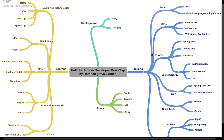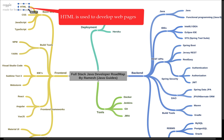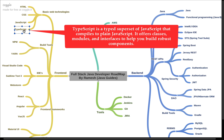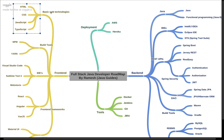On the front-end side we have HTML, CSS, JavaScript, and TypeScript — these are the basic web technologies. HTML is used to develop web pages, CSS to style them, JavaScript to manipulate DOM elements and process UI logic. TypeScript is a superset of JavaScript that adds static typing and object-oriented concepts like classes and interfaces, and ultimately compiles to plain JavaScript.